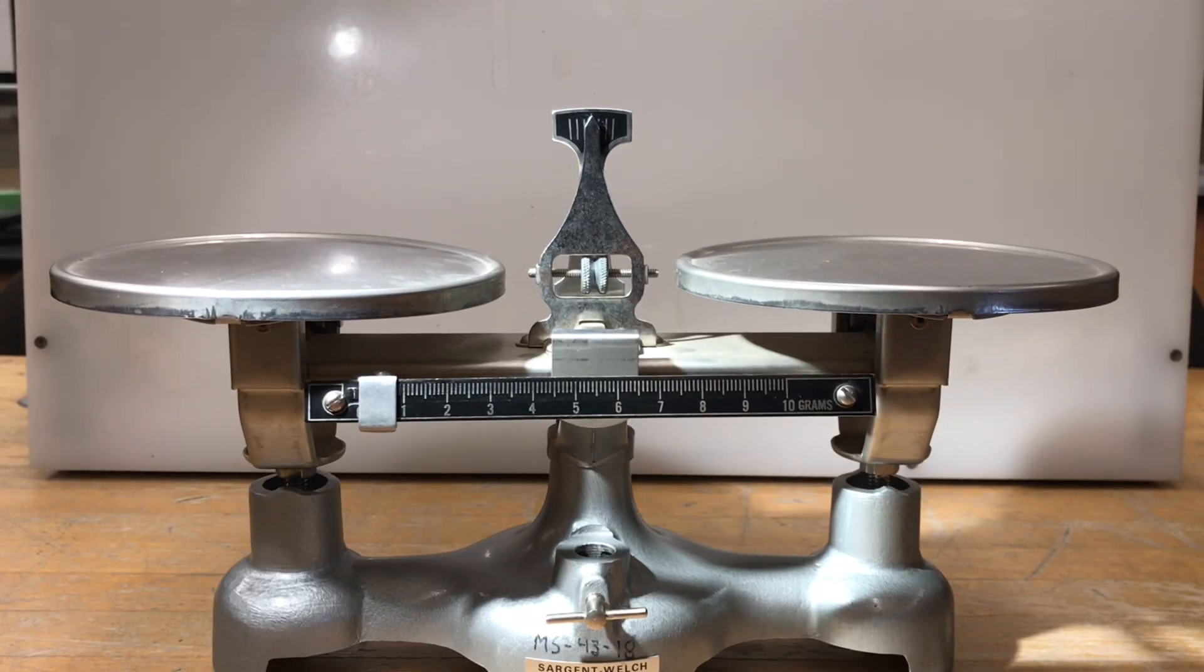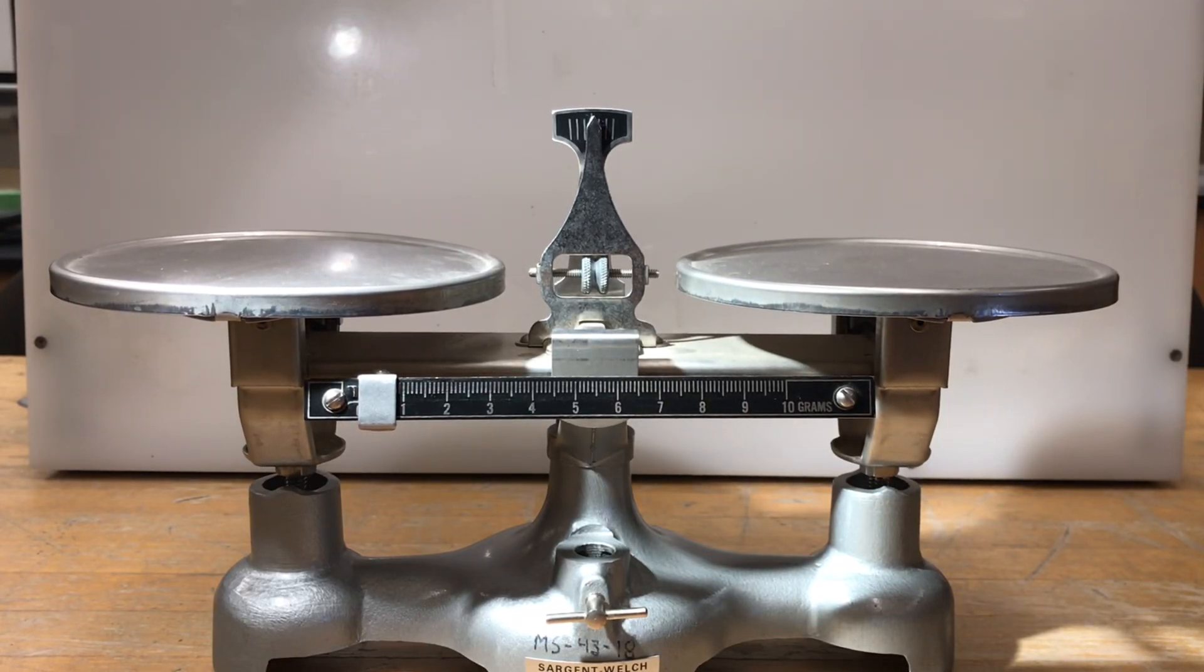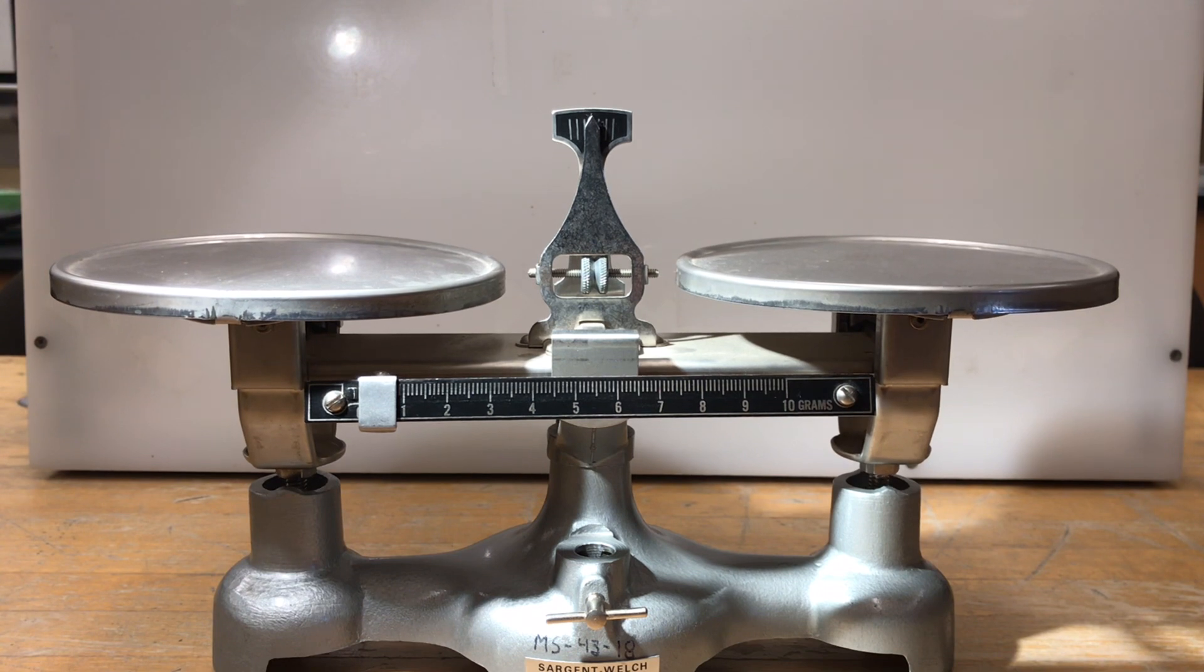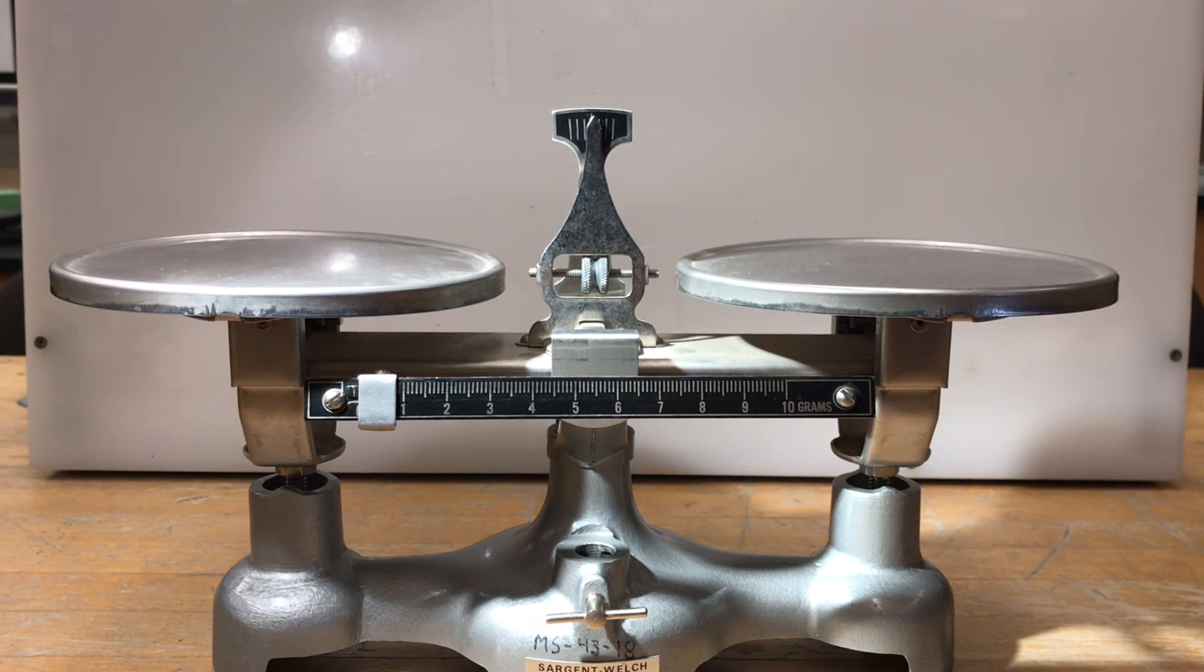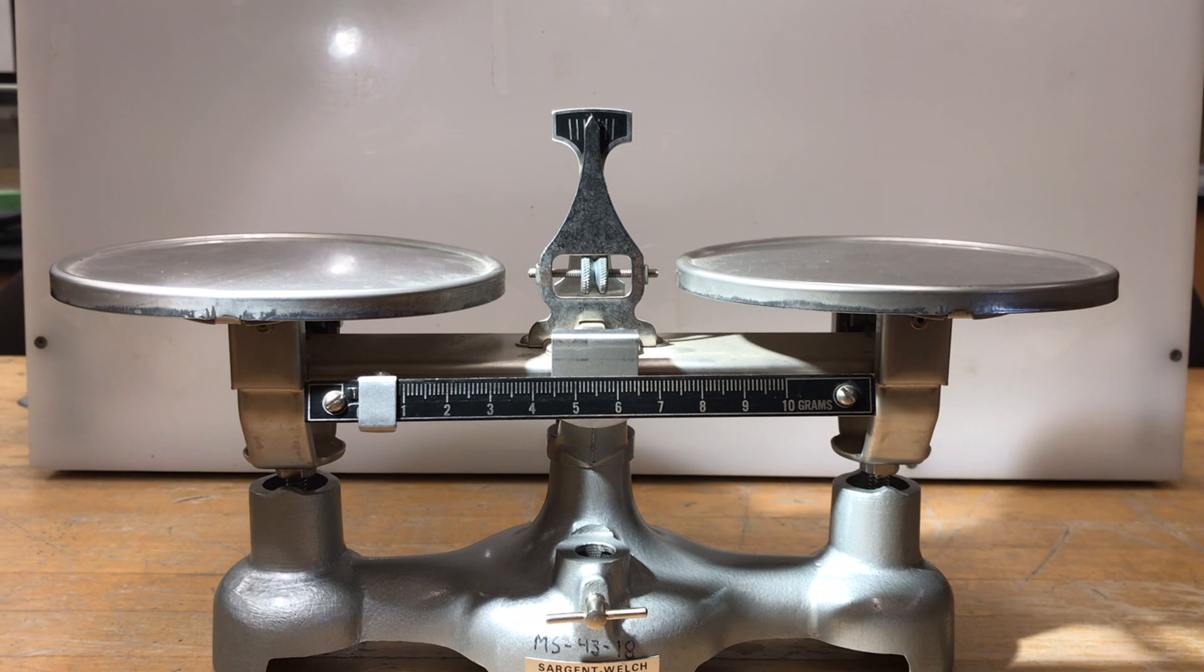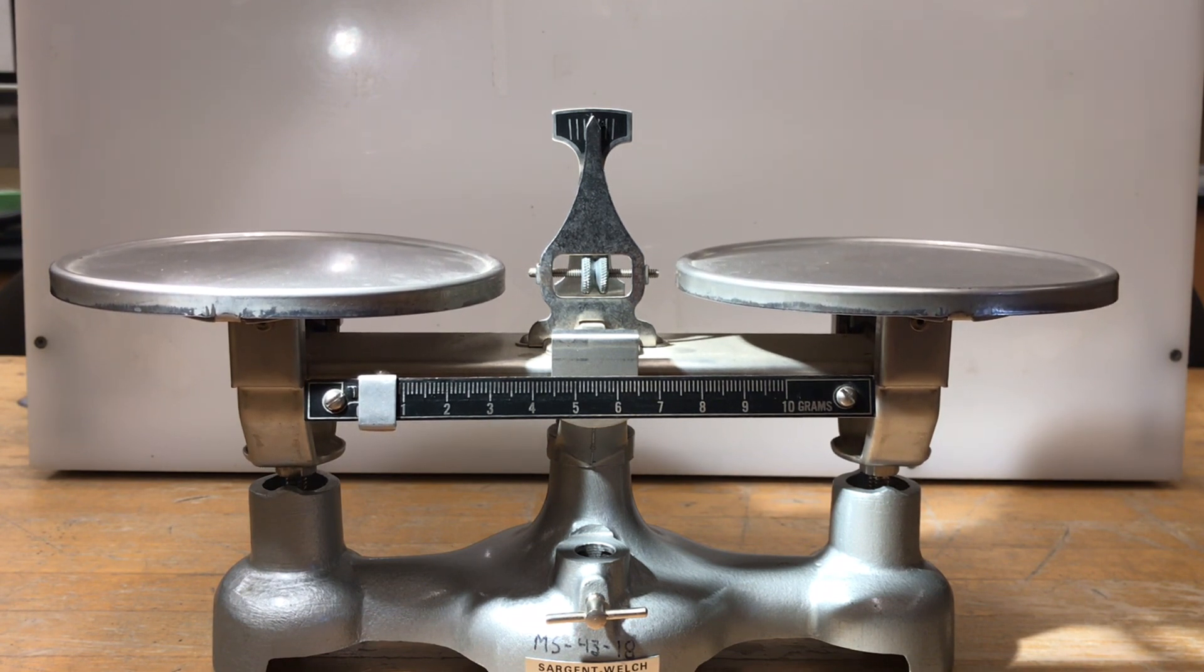As you saw in the first part of the lab, if we can measure the apparent weight of an object both in air and in a fluid, then we can look at the difference to figure out the buoyant force of the fluid acting on the object.